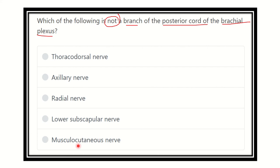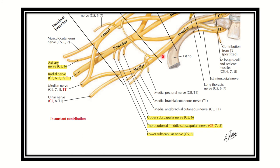Looking at the brachial plexus diagram, we can see the lateral cord, posterior cord, and medial cord. From the posterior cord, there are two terminal branches and three other branches. The three collateral branches are the upper subscapular, middle subscapular (thoracodorsal), and lower subscapular nerves.